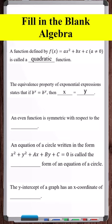An even function is symmetric with respect to the y-axis. Next, an equation of a circle written in the form x² + y² + Ax + By + C = 0 is called the general form of an equation of a circle.